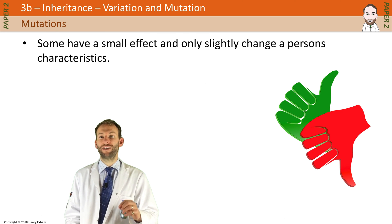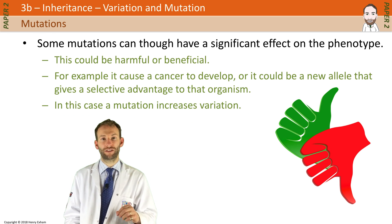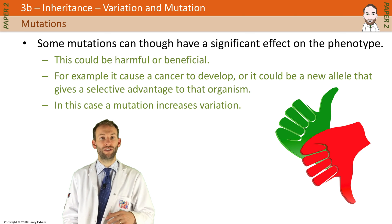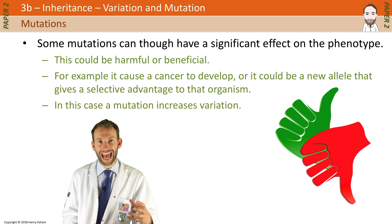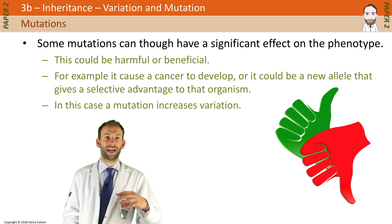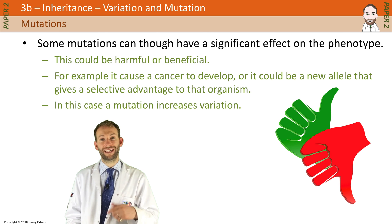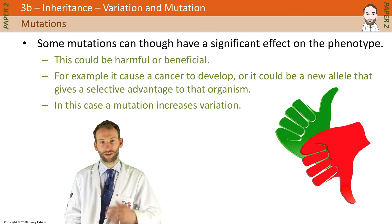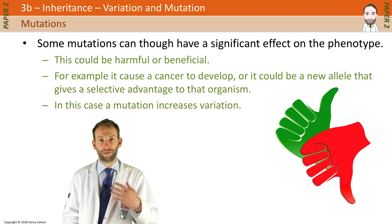Some mutations have a very small effect and only slightly change a person's characteristics. Some mutations can have a significant effect on the phenotype — they could end up being really harmful or they might end up being beneficial. Harmful ones can cause cancer to develop. Beneficial ones could be a new allele that gives a selective advantage, like slightly longer hair in a winter animal that lives in cold conditions. These kinds of mutations increase variation in a population, which is a good thing to help the organism survive long term and to evolve.